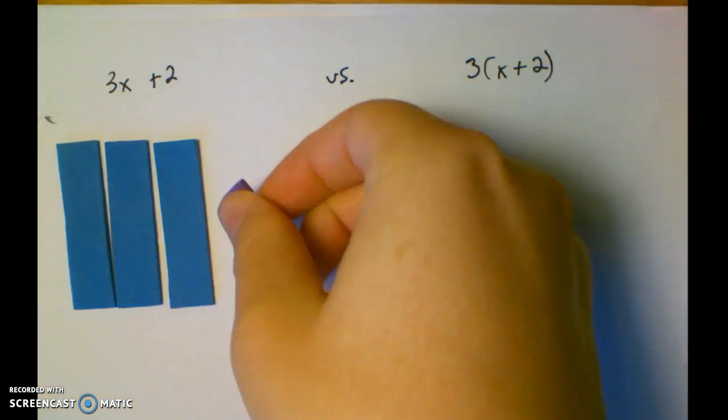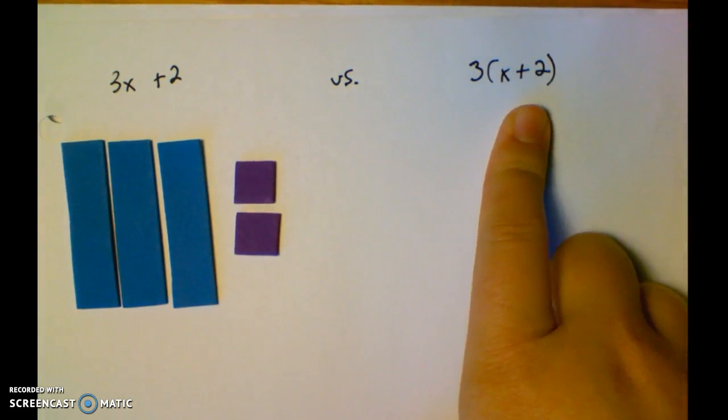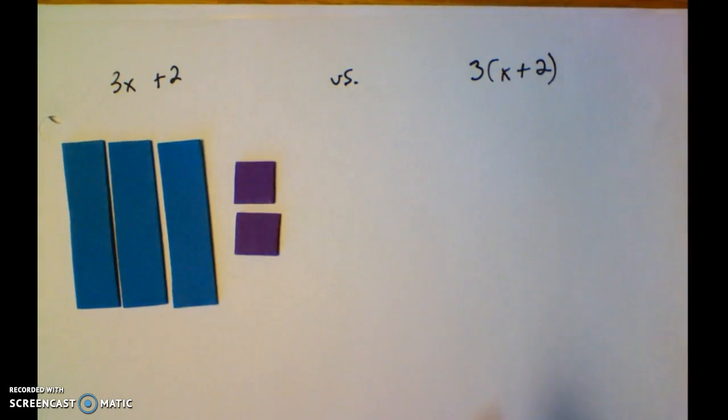And then that I have two 1s as well. Now, notice that this expression over here has the same symbols except for these parentheses, these grouping symbols.